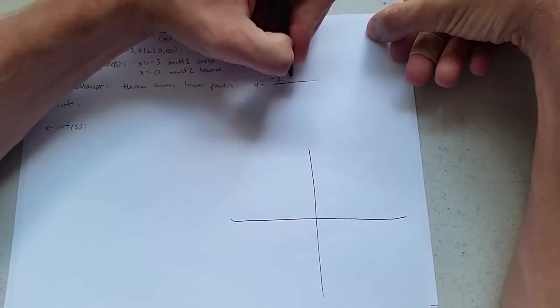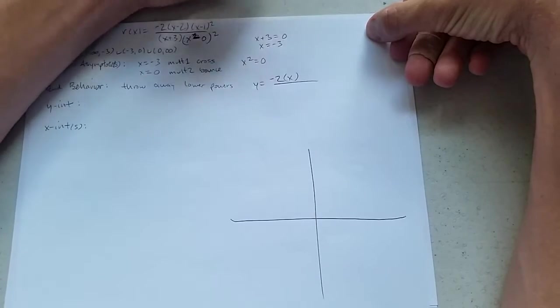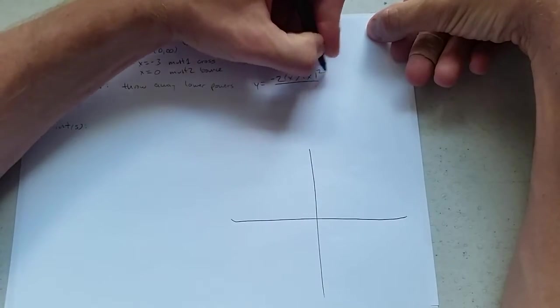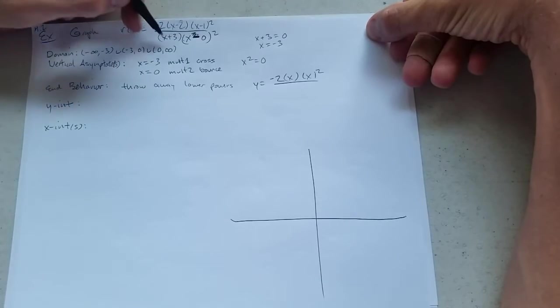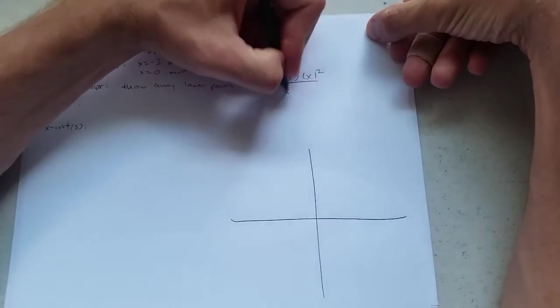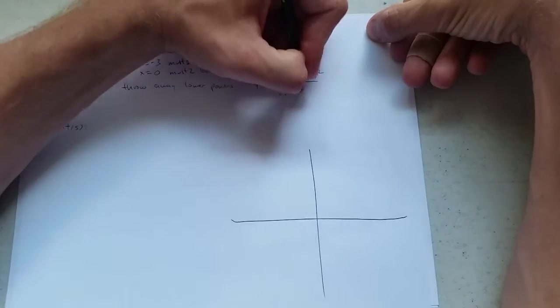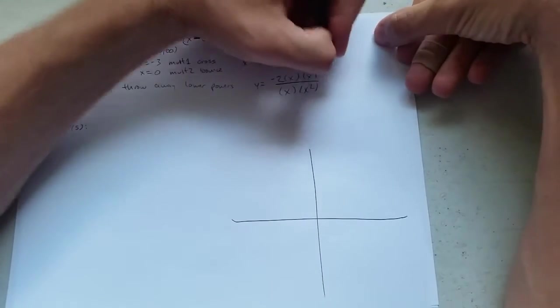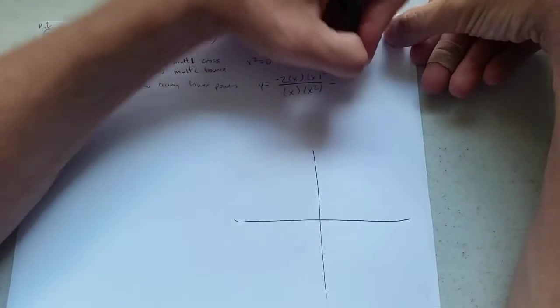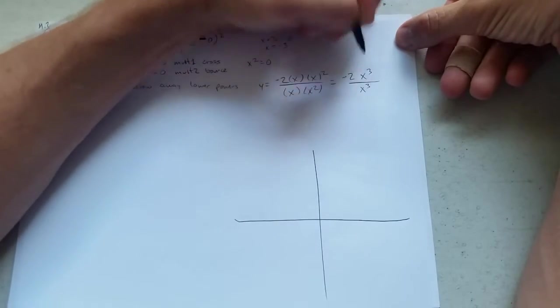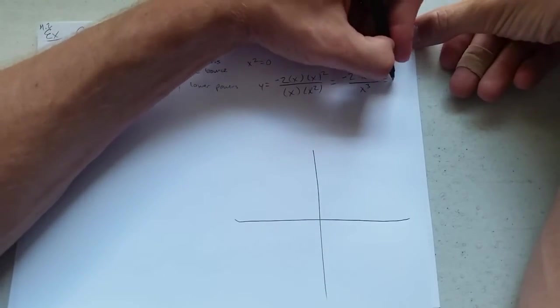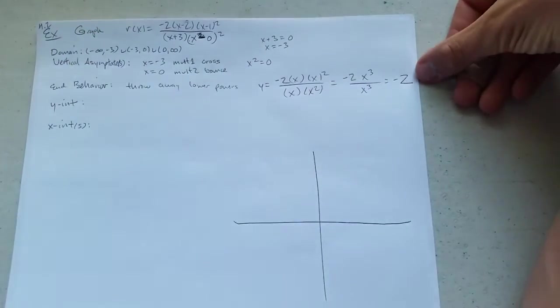Negative 2 stays there. I'm just going to write it as x times x squared. What I'm doing is getting rid of the minus 2, getting rid of the minus 1, x plus 3. So it's just x times x squared, just x squared. Combined the terms together, x cubed over x cubed. Now they are the same, they cancel out, it reduces to negative 2.